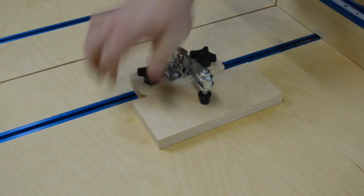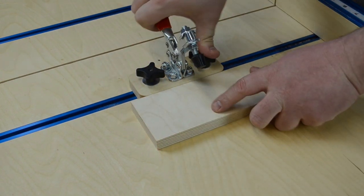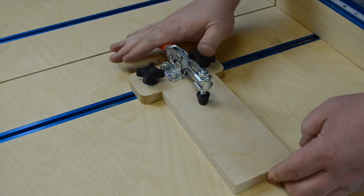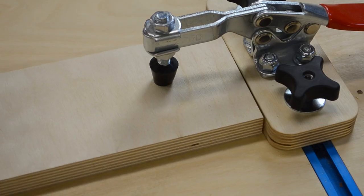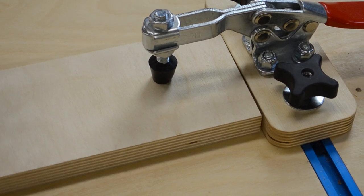The only problem is some of these cheaper toggle clamps come with a small pad to secure the work piece. It's great up against a fence, but sometimes when it's extended out it can wiggle around and you don't want that.